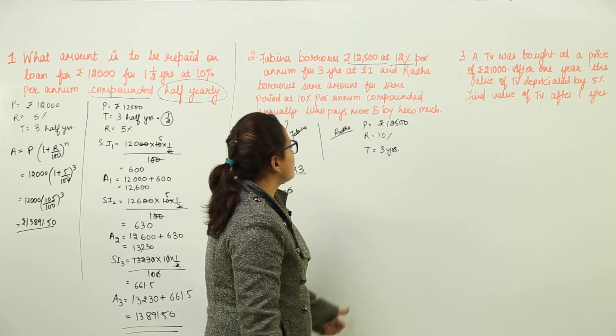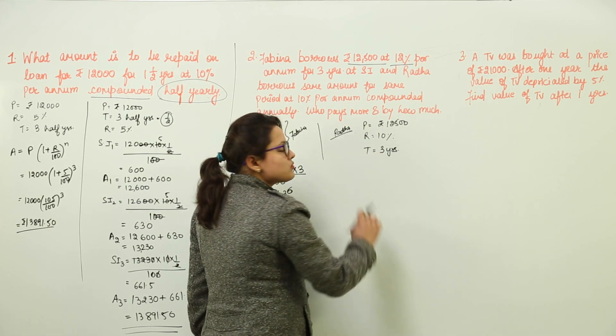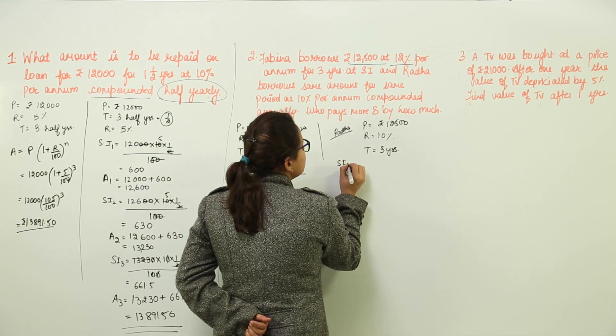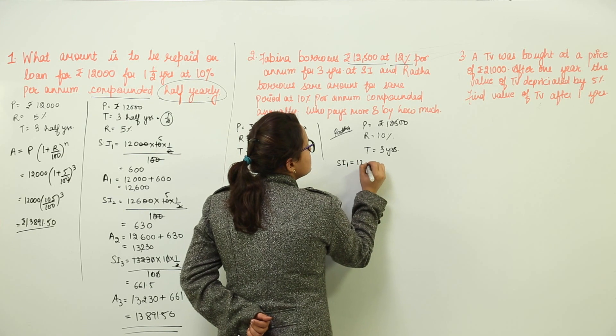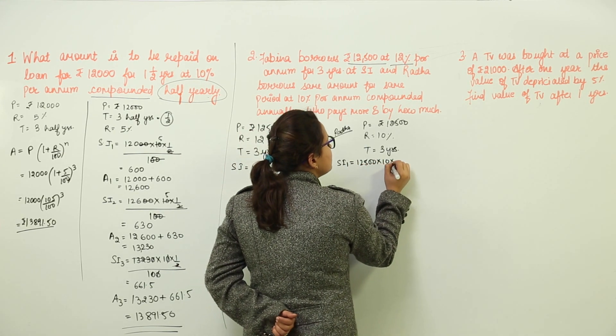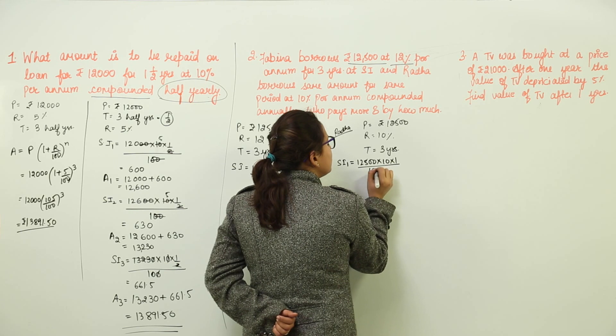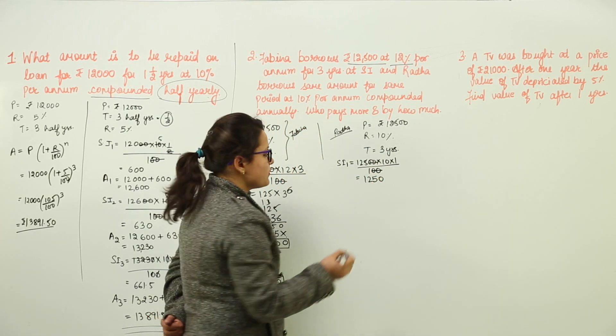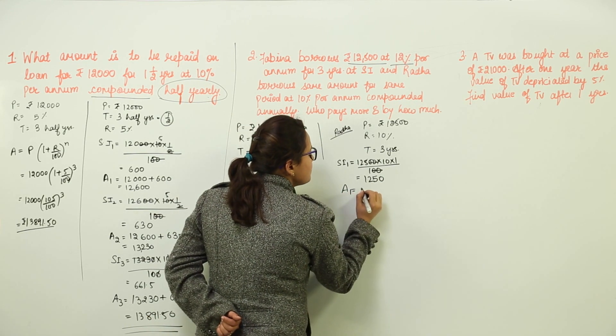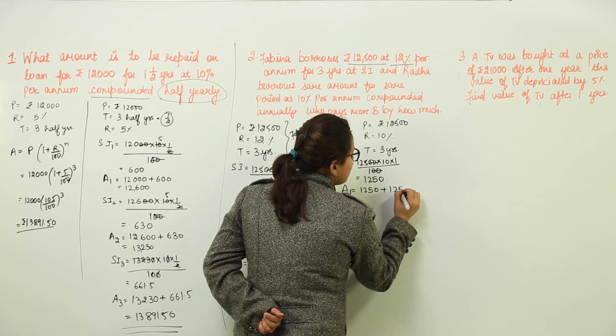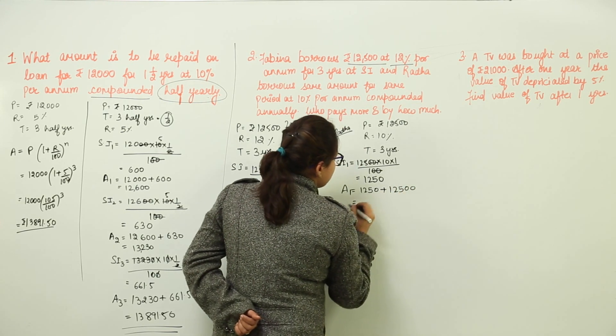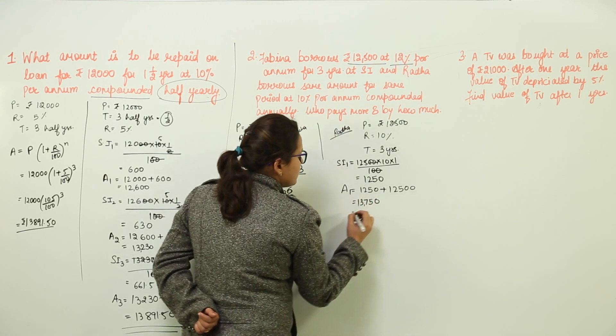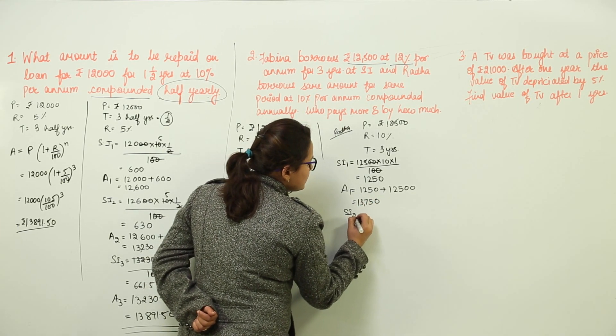Let us try the calculations for Radha now. She was going to pay the compound interest. Simple interest for first year would be 12,500 multiplied with 10 into 1 upon 100. The simple interest we get is 1,250. The amount for first year would be 1,250 plus 12,500. That gives us 13,750.